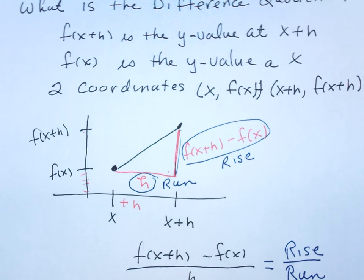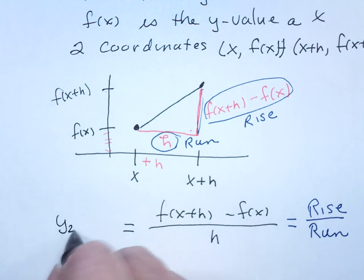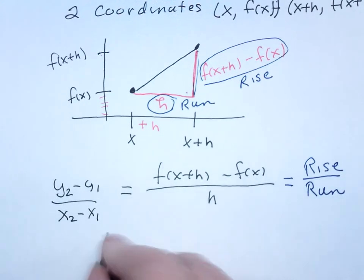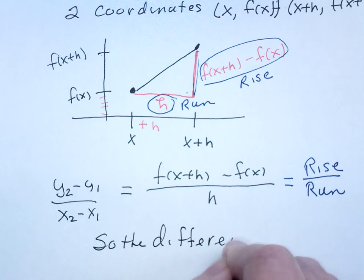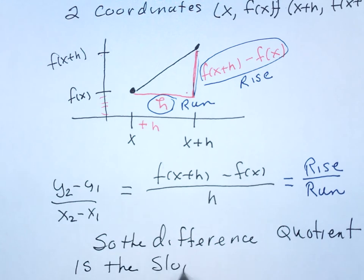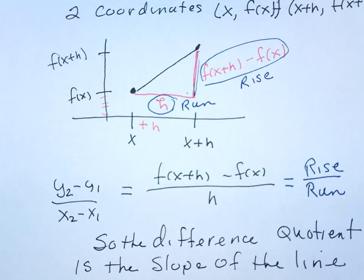So what we know it as, in baby form, is y2 minus y1 over x2 minus x1. So the difference quotient is the slope of the line in function notation.